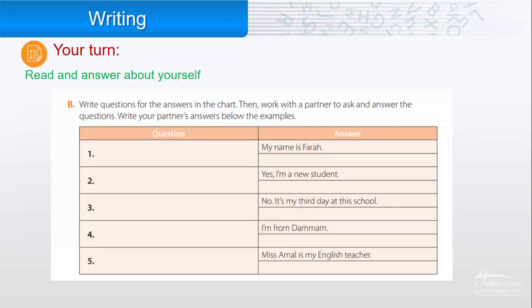Read and answer about yourself. Write questions for the answers in the chart. Here we have five answers. You are going to write the questions and write a second answer for each question. My name is Farah, so the question is what's your name? I can also say Farah.